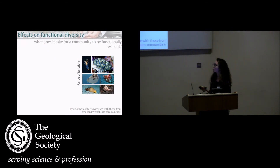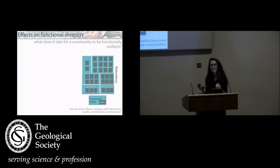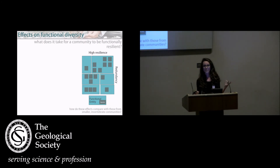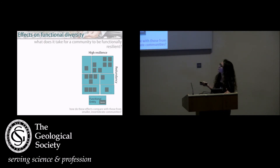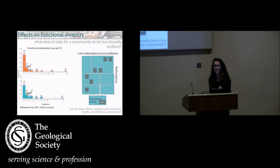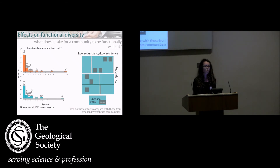How come some functions are more resilient to loss? It depends on two things: the range of functions — different animals doing different things — and also redundancy, meaning how many species are playing that function. If you have a highly redundant system and experience an extinction, you don't lose the functions because at least one species is left. But in a less redundant community, you lose functions because they weren't very redundant. That was the case for marine megafauna: most functional entities were filled by only one or two species.